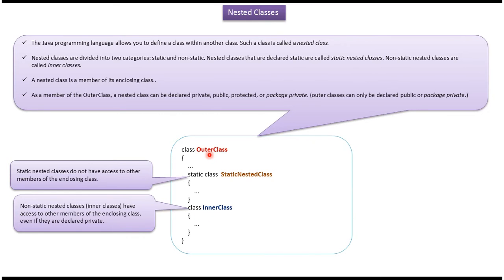An outer class can be declared with a public access modifier or package-private access modifier. Package-private access modifier means no modifier. An inner class is a member of the outer class, so it can be declared with private, public, protected, or package-private access modifier.